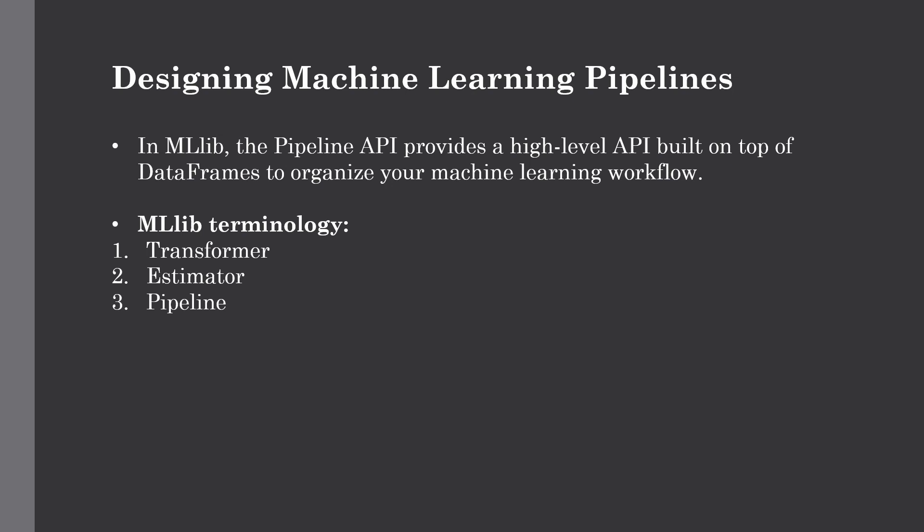The concept of pipeline is very common across many machine learning frameworks — it's a way for organizing a series of operations to apply on top of your data. In MLlib, this pipeline API provides a high-level API built on top of DataFrames, which are like tables in RDBMS — a structured API in Apache Spark used for organizing machine learning workflows. This pipeline API is composed of a series of transformers as well as estimators.